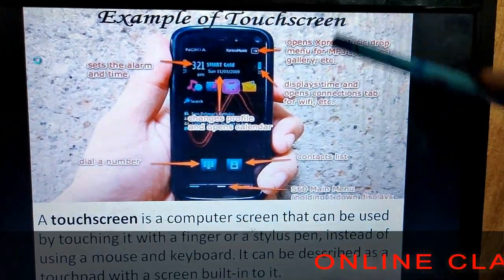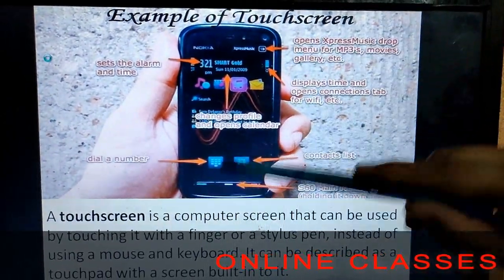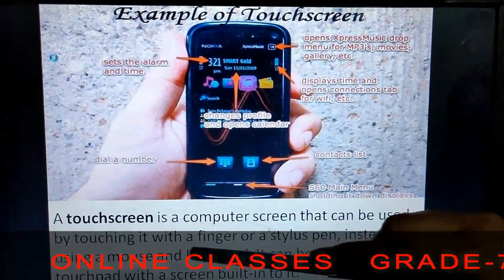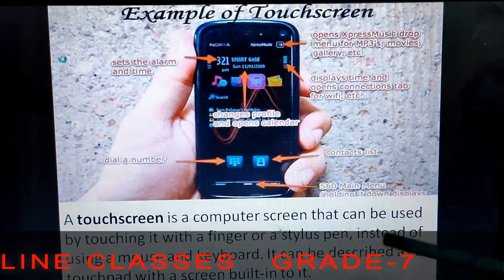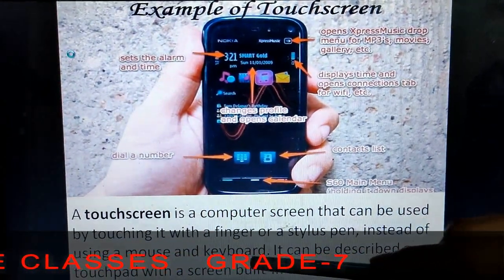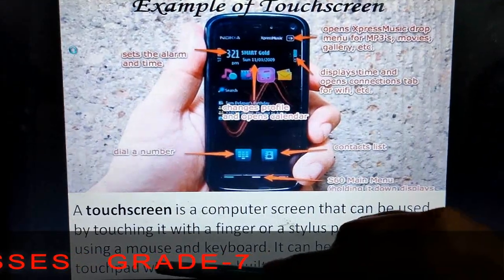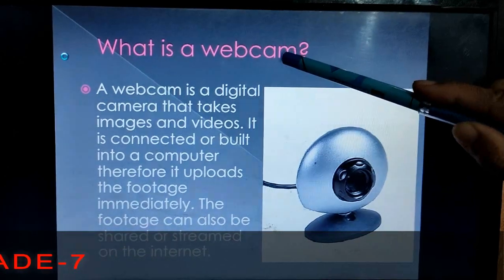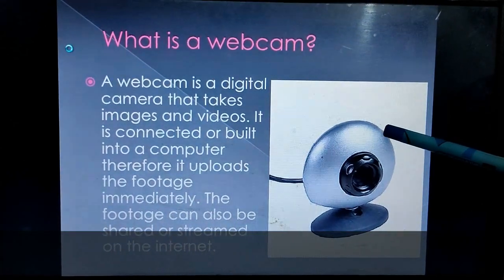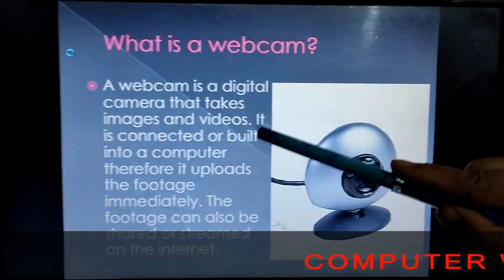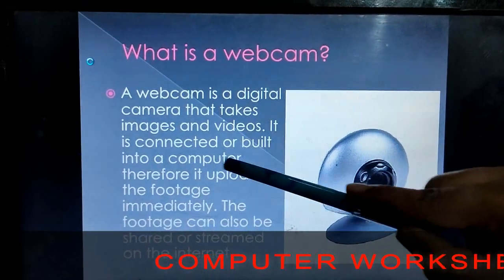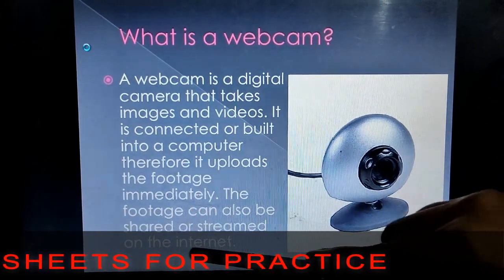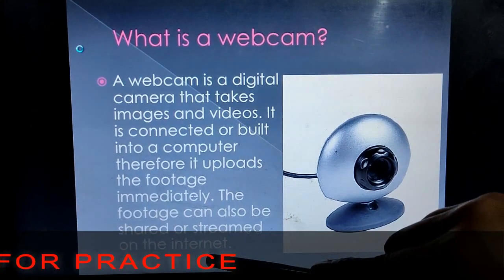Next is the touch screen. The most prominent example is our mobiles. It is a computer screen that can be used by touching it with a finger or a stylus pen instead of using a mouse and keyboard. It can be described as a touchpad with a screen built into it. Next is the webcam — a digital camera that takes images and videos, connected to the computer to upload images immediately, and we can share or stream it on the internet.